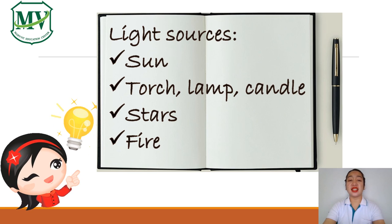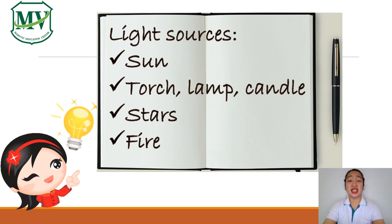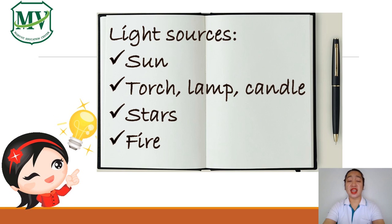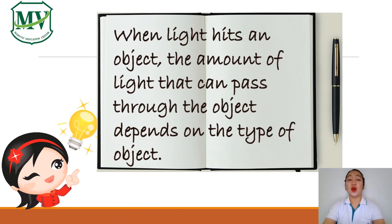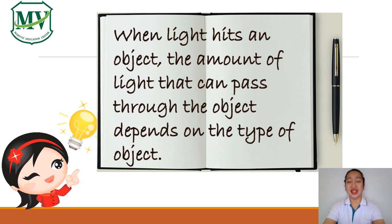Furthermore, light can hit objects. It can hit a human — it can hit our skin, hair, or anything. So when light hits an object, the amount of light that can pass through the object depends on the type of object. Meaning, different objects or different materials allow different amounts of light to pass through them.